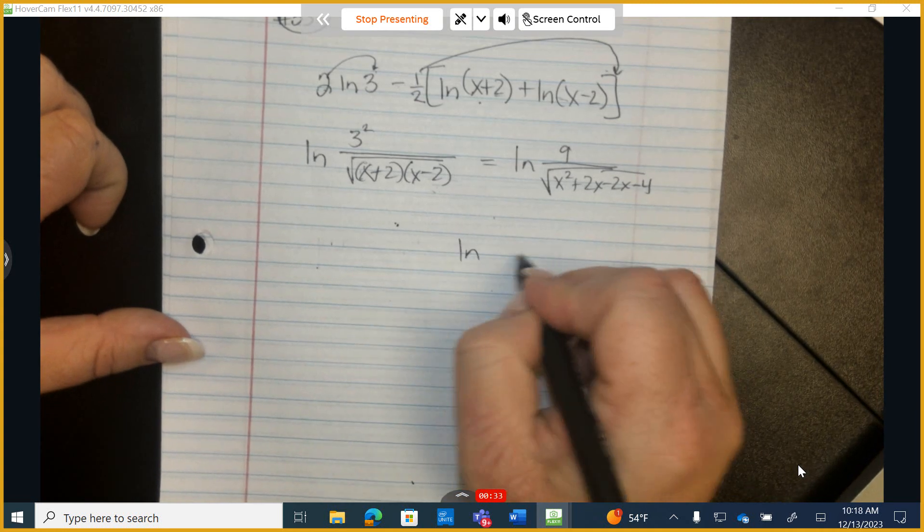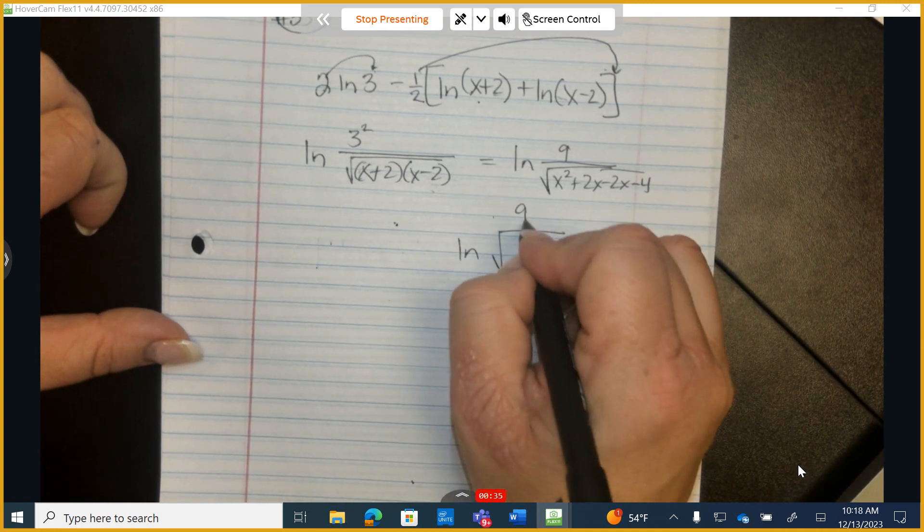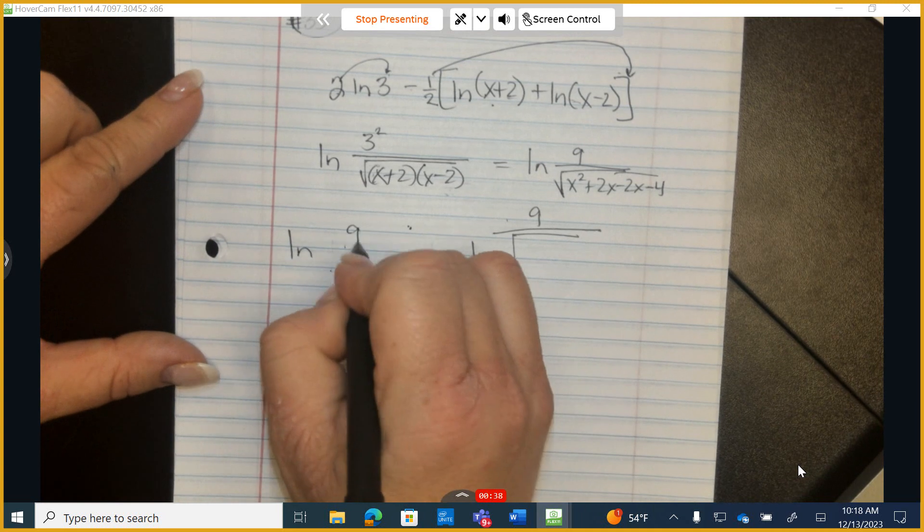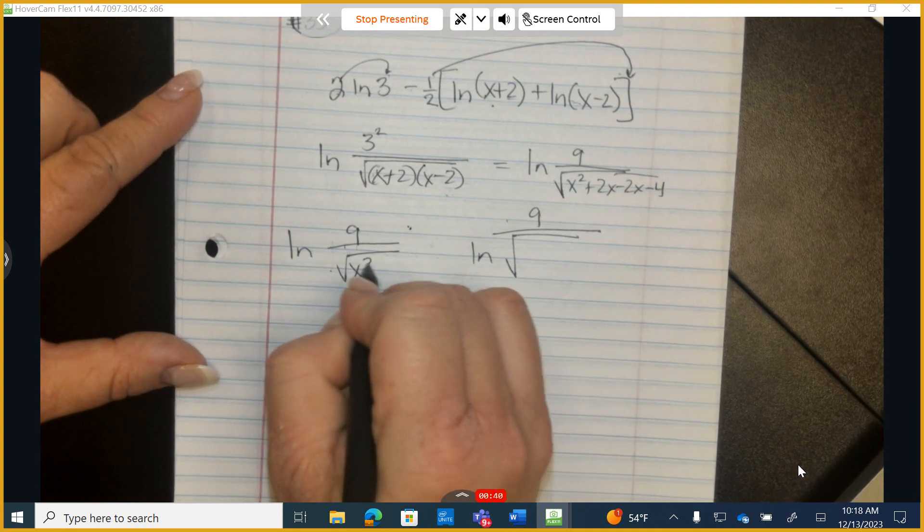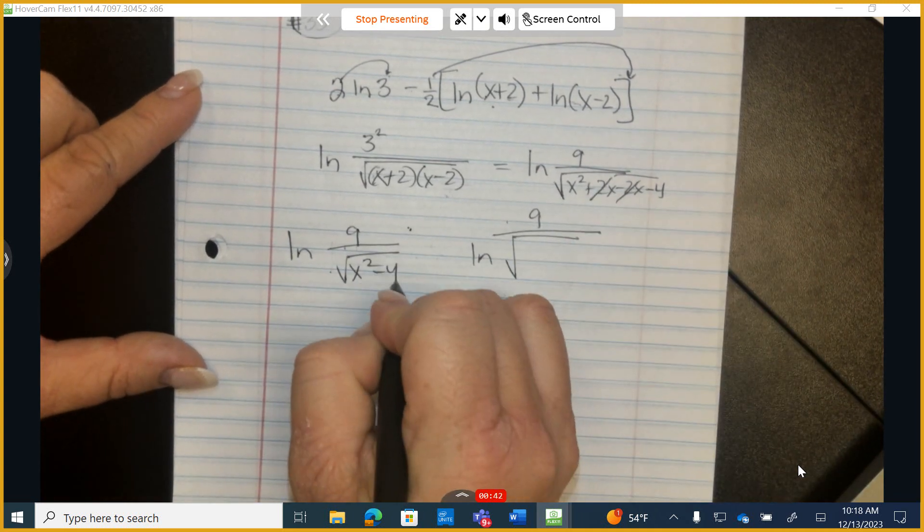And my final answer is the ln of 9 over—oops, sorry, that wasn't very nice—ln of 9 over the square root of x squared minus 4.